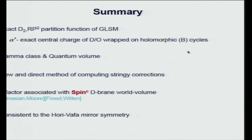To summarize, we discussed the hemisphere partition functions and RP2 partition functions of supersymmetric gauge theory, from which we can compute the exact central charges of D-branes and orientifold planes wrapping holomorphic cycles. This computation confirms the appearance of the Gamma class, but this correction must be understood as an alpha-prime correction to the volume of the Calabi-Yau space rather than a modification of the Ramond-Ramond charge. Furthermore, from the exact hemisphere partition function, we can reproduce the subtle factors in the D-brane charge associated with the spin-C issue, as proposed by Minasian-Moore. Everything is consistent with all familiar symmetries, including CPT invariance.